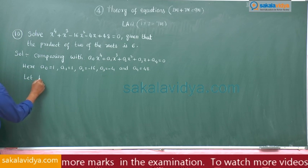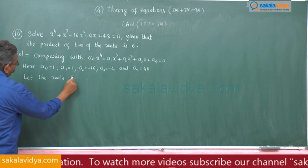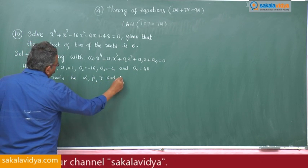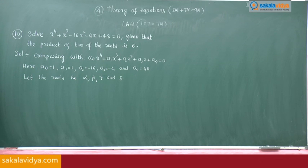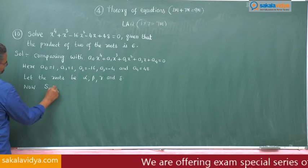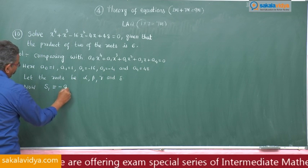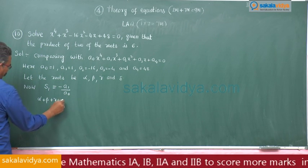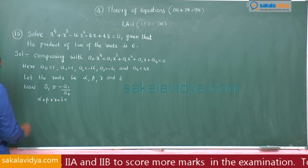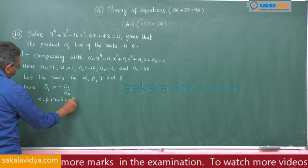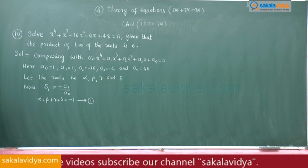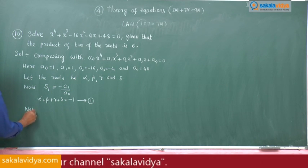Let the roots be alpha, beta, gamma, and delta, because the degree is 4, so there are 4 roots. First, let us find the sum of the roots. S1, which is alpha plus beta plus gamma plus delta, is equal to minus A1 by A0, which is minus 1 by 1, equal to minus 1. Call this equation 1.